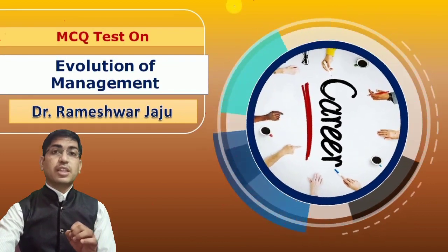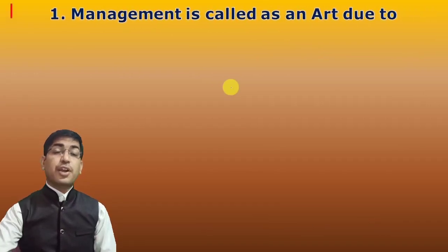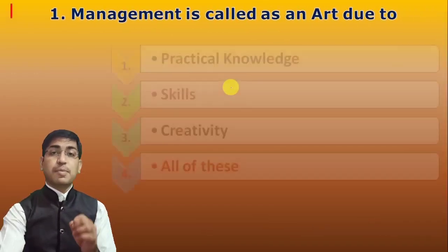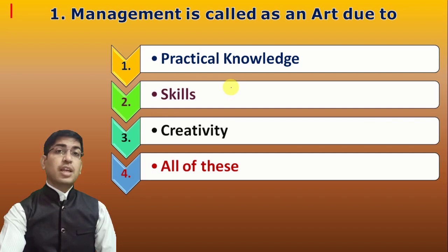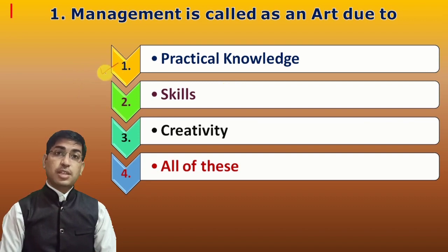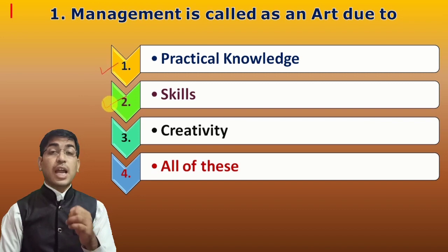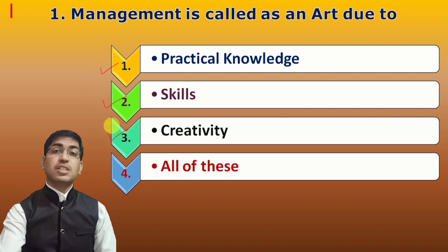First question: Management is called as an art due to which? Management is called as art due to either practical knowledge, skills, creativity, or all of these. When management is called as art, it is due to all of these things — practical knowledge, different types of skills such as human skills and technical skills, and creativity. So the answer is all of these.